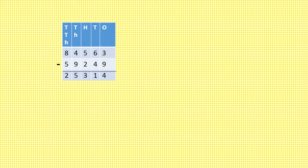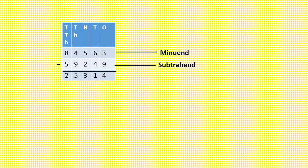After subtraction we get 25,314 rupees. Children, here 84,563 rupees is known as the minuend. 59,249 is known as the subtrahend. 25,314 is known as the difference.